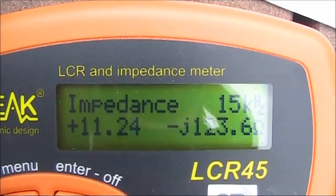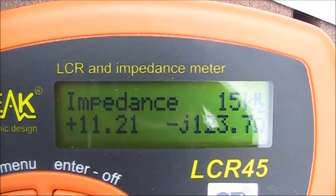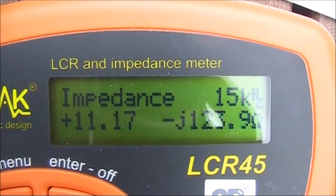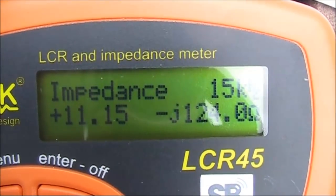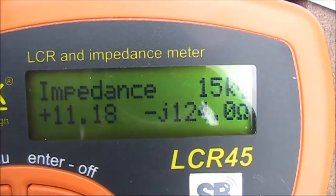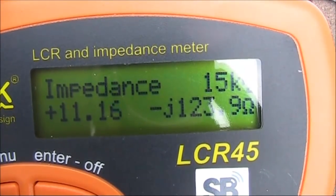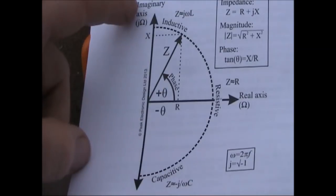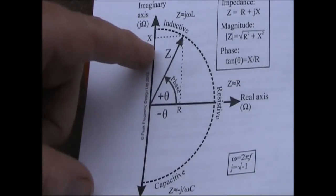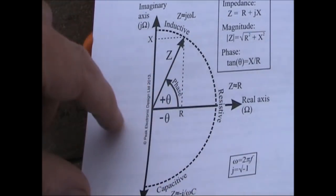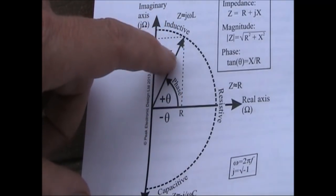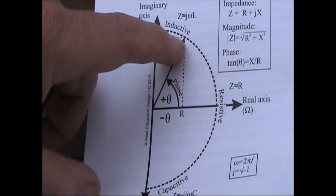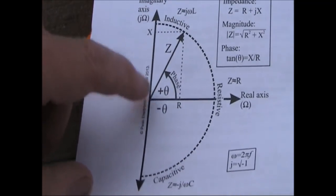Looking at the impedance function, you'll notice there are two numbers — it's a complex number with two components. The one on the left is the resistive component, and the one on the right is the reactive component. Both are measured in ohms. What this means is that at 15 kilohertz, this component has a reactance of 124 ohms. And as it's negative, it's a capacitive reactance. The imaginary axis goes from inductive to capacitive — that's plus and minus — and sideways, your x-axis is your resistance. So a complex impedance has a resistive component along the x-axis and a reactive component which, if it's up is inductive, and if it's down is capacitive. That varies with frequency, as we'll demonstrate.